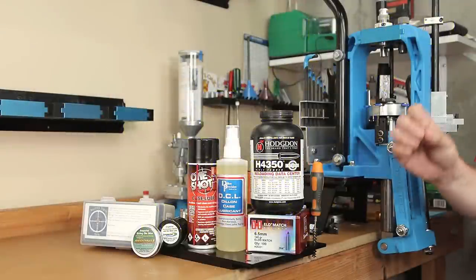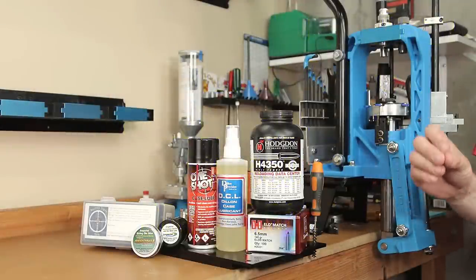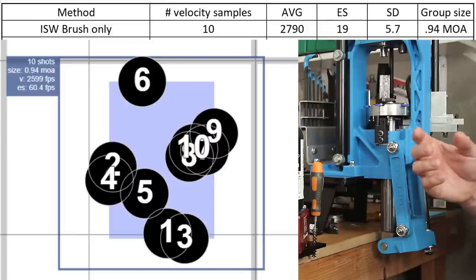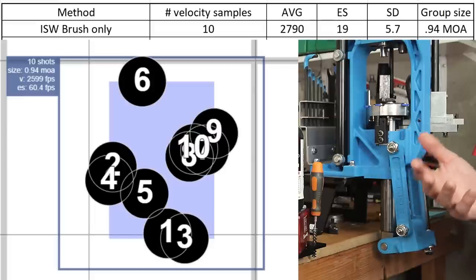For our standard process using Imperial sizing die wax on 10 samples, our average velocity was 2790 feet per second. Our standard deviation was 5.7 and our extreme spread was 19. The group size over 10 rounds was 0.94 MOA.